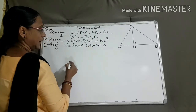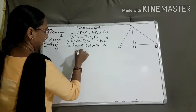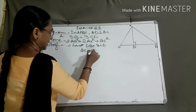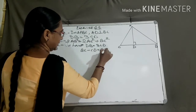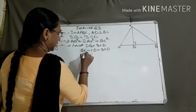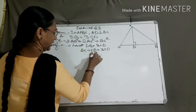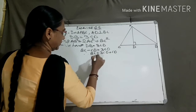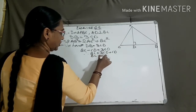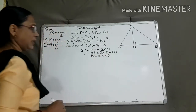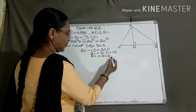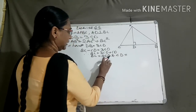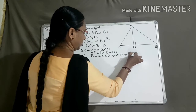DB can be written as BC minus CD, equal to thrice CD. Therefore, BC equal to thrice CD plus CD, so BC equal to 4 CD. Here we got BC equal to 4 CD, and therefore CD equal to one-fourth BC. Let this be equation number 1.